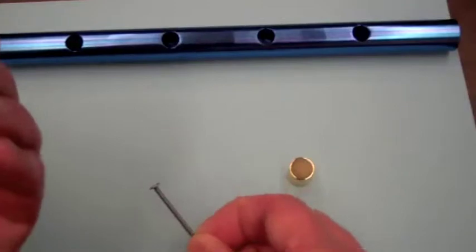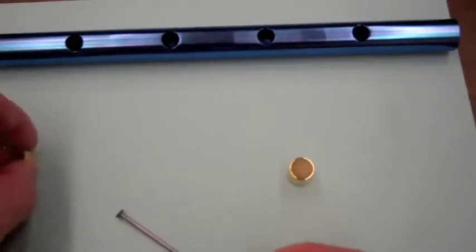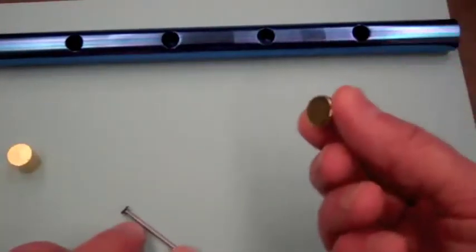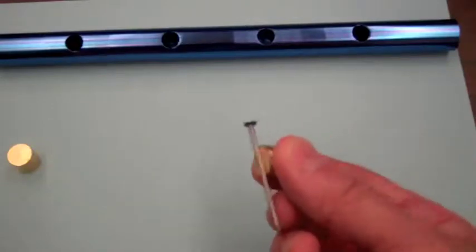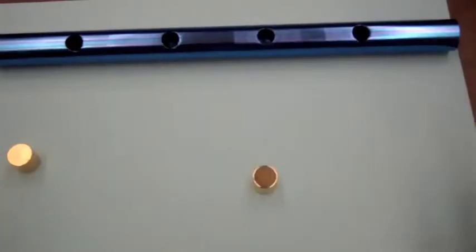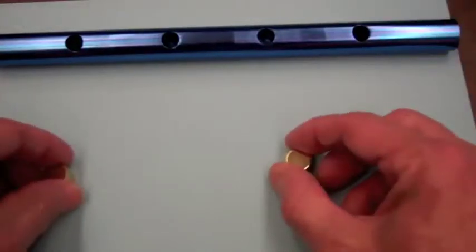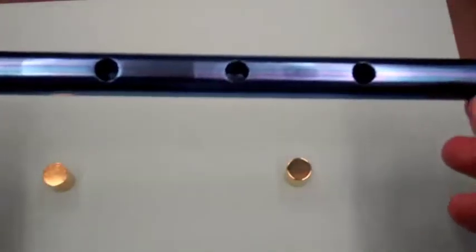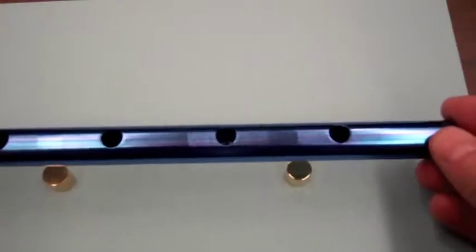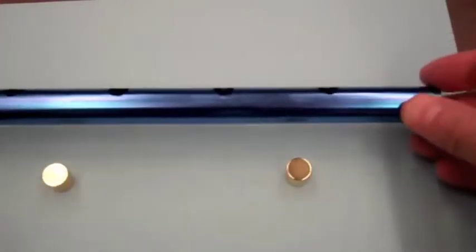But it will be picked up by the magnetic slug here. This pipe is aluminum, and aluminum is paramagnetic, so it very weakly magnetizes. It will not pick up this magnetic slug.